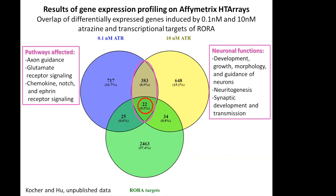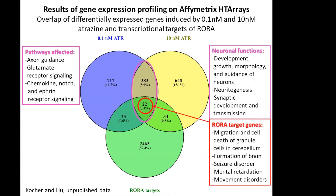The functions associated with these overlapping genes include development, growth, morphology, guidance of neurons, neuritogenesis, synaptic development, and transmission — all of which are implicated in the pathobiology of autism. In the very middle of this Venn diagram, we see 22 genes. These are specifically RORA target genes that overlap between the two concentrations in terms of differential expression. The associated functions here include migration and cell death of granule cells in the cerebellum, brain formation, seizure disorder, mental retardation, and movement disorders — the latter three of which associate with certain forms of autism, particularly the more severe forms.